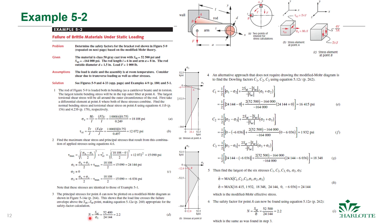Using the modified Mohr theory for the first and fourth quadrant failure envelope, we calculate the safety factor based on ultimate tensile strength divided by the largest principal stress σ₁. The result is a safety factor of 2.2. We can verify this using the Dowling factors: plugging in σ₁, σ₂, σ₃ to get C₁, C₂, C₃, taking the maximum gives the same modified Mohr effective stress, confirming the safety factor of 2.2.